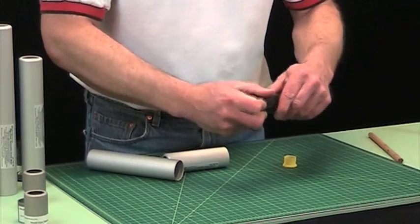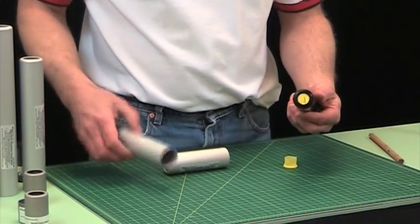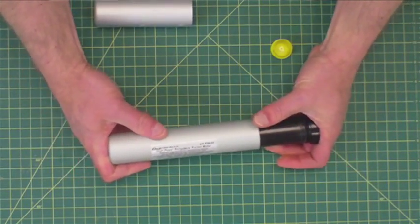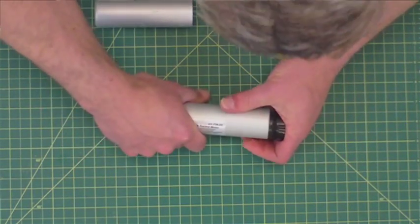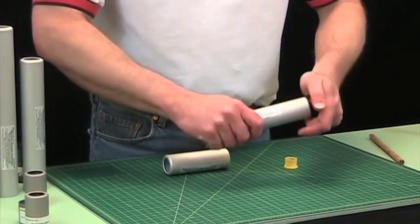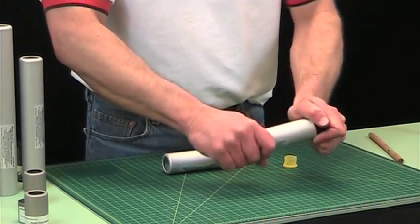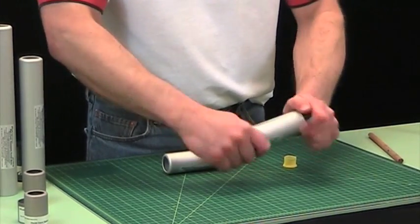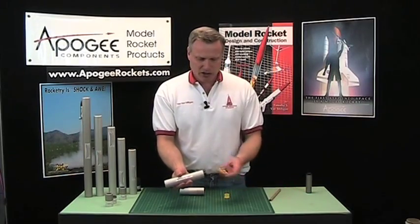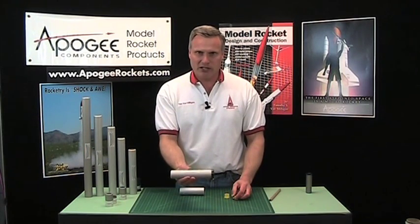So this gets slid into here and then this is a two grain case so we'll slide it into the two grain case, the aluminum case, and this is a tight fit. And then you'll just screw it in by hand and you might want to get a shop rag or something just to grip this a little bit easier. You just screw it together and you'll stick the igniter in it and your rocket's ready to go.